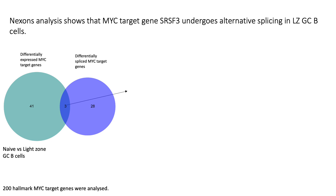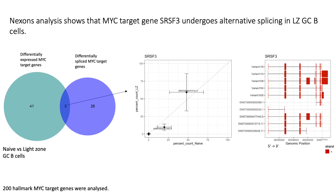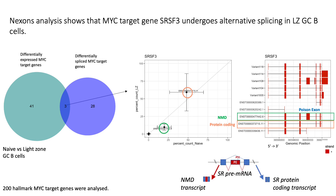We compared naive and germinal center B cells, concentrating on MYC target genes because MYC is a transcription factor that regulates positive selection in the light zone region. When we looked into differentially expressed and differentially spliced genes, among overlapping genes we were able to detect serine-rich splicing factor SRSF3. SRSF3 is post-transcriptionally regulated during the germinal center reaction, with an increase in the protein-coding transcript isoform in the light zone. This was due to poison exon inclusion in naive B cells, which directs SR family members to nonsense-mediated decay.